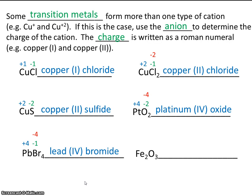Okay, let's do one more. You'll recognize iron as a transition metal. That means we need to say what the charge is. To help us figure out the charge, once again, we use the anion.